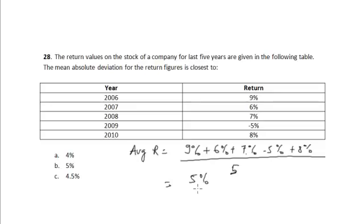So it will be equal to 5%. Now the mean absolute deviation, MAD, is equal to mode of 9% minus 5%—that is, individual return in each year minus their average return for the five years